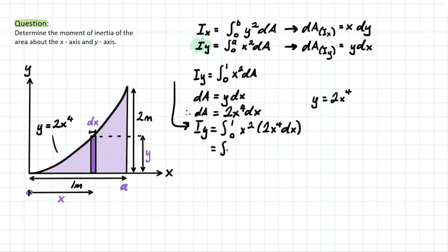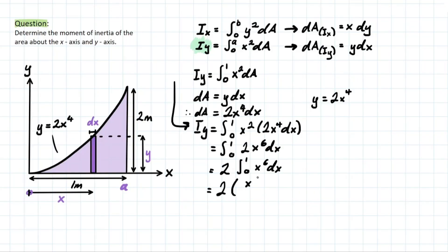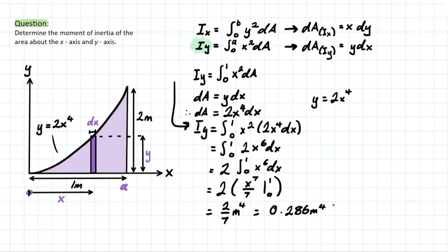Distributing, we get ∫₀¹ 2x⁶ dx. Taking out the constant 2 and integrating x⁶, we apply the power rule to get 2 · [x⁷/7] from 0 to 1. Solving this gives us 2/7 meters to the fourth power, which is approximately 0.286 m⁴. That's our solution for iy.